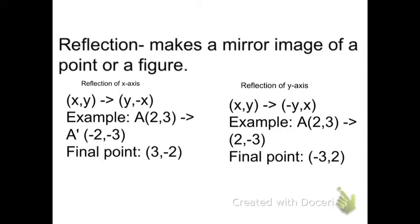Reflection of the x-axis makes x negative and just flips it, so it will be (y, negative x). Reflection of the y-axis: x will be negative and then we flip it, so it will be (negative y, x).